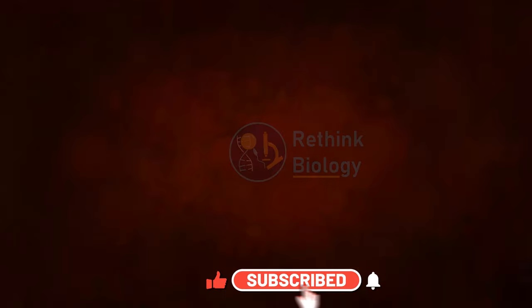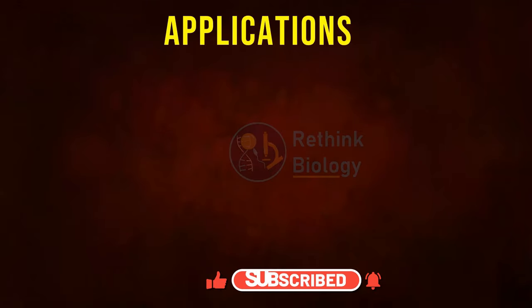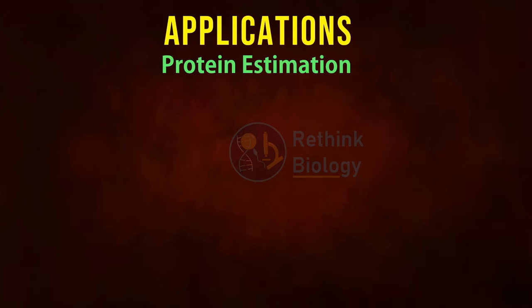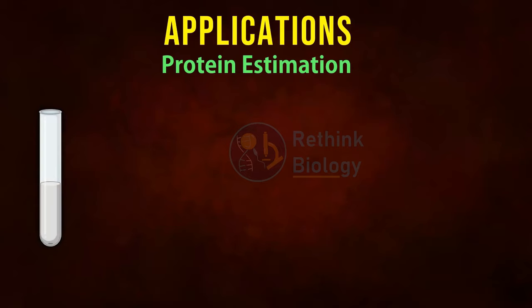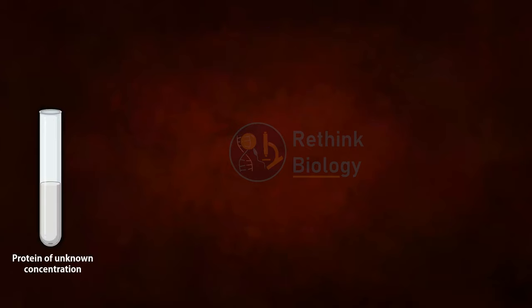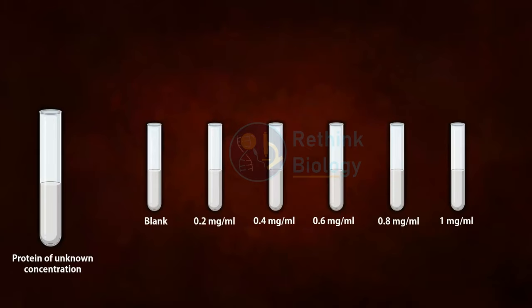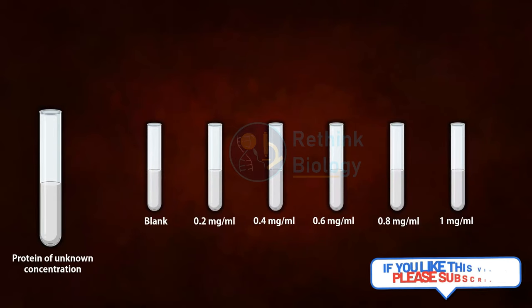Coming to the application of a spectrophotometer, for example, we are taking protein estimation. Suppose you have a sample of unknown protein concentration and you want to estimate it. First, you have to take a series of known concentrations of protein along with a blank, then add reagents to all the tubes.